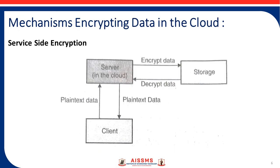Now let's look at the mechanisms for encrypting data in the cloud. The first mechanism is server-side encryption. In this type of encryption, the data is encrypted by the server before being written to disk. The client sends data and the server applies encryption to it. When the client wants to read the data, the server decrypts it and sends it securely to the client. The encryption and decryption process is completely transparent to the client.